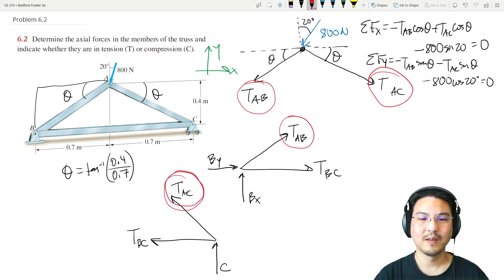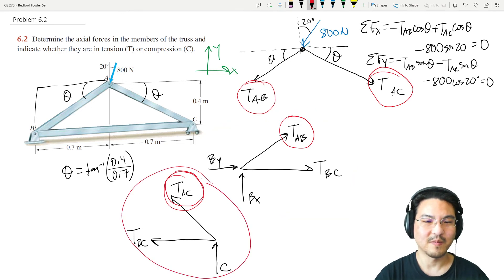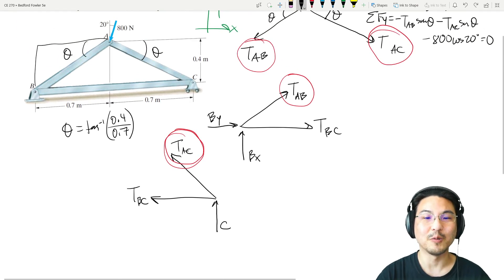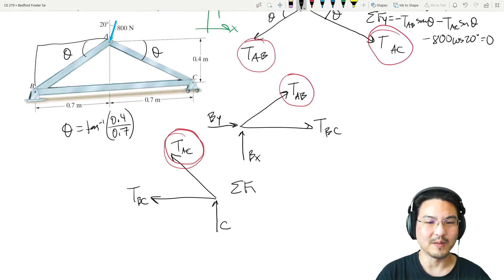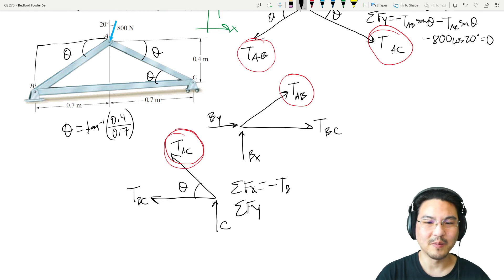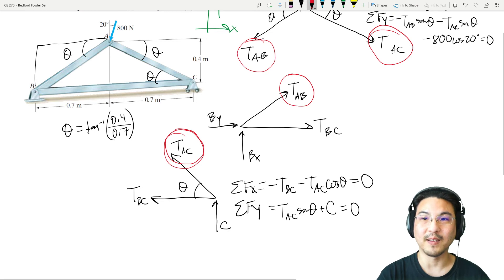So that means where should we go next? This one has three unknowns, but this one has two unknowns, so let's go to joint C. Write these equations. This angle is also theta. X direction: negative TBC minus TAC cosine theta equals 0. Y direction: TAC sine theta plus C equals 0.